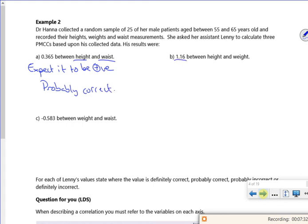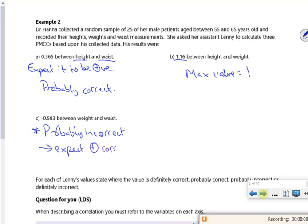Well, that can't be right, can it? Because the maximum value is one. So that's definitely not right. So weight and waist. I guess it's probably correct to kind of expect that to be a positive correlation.